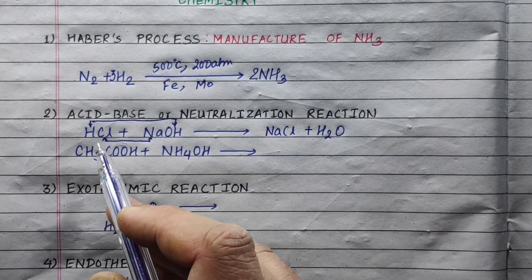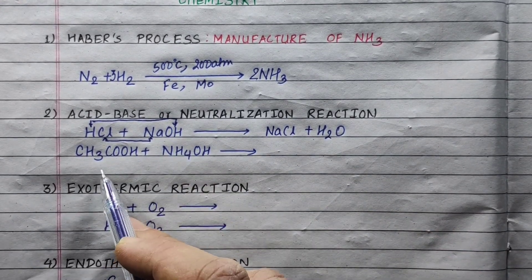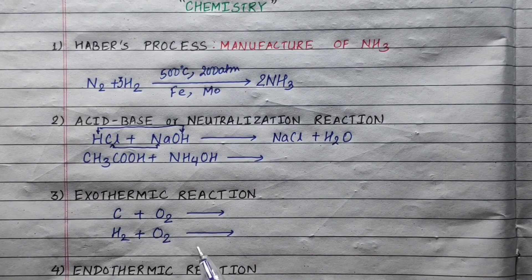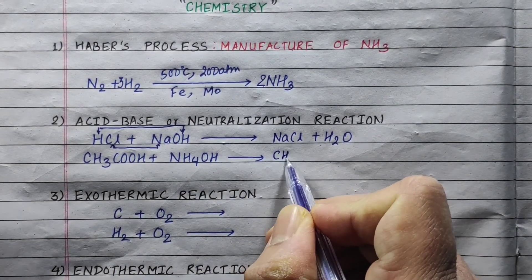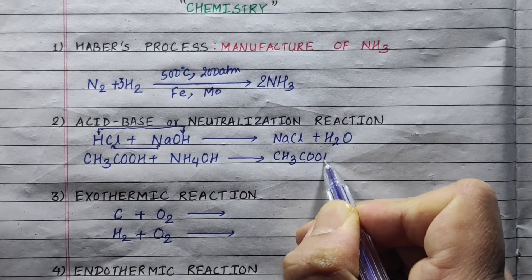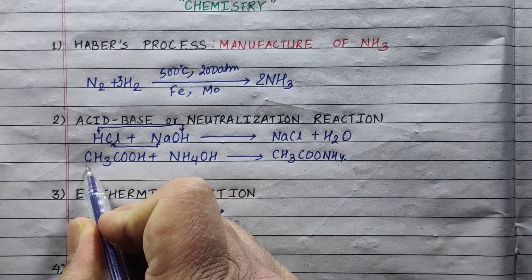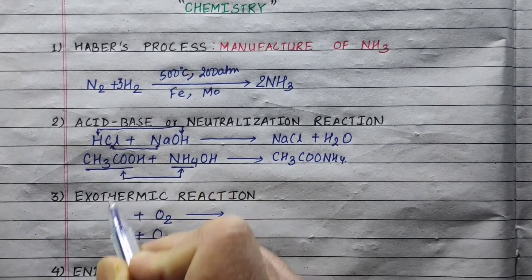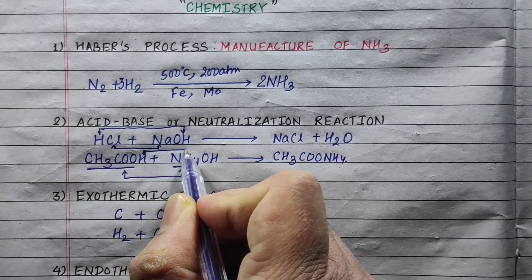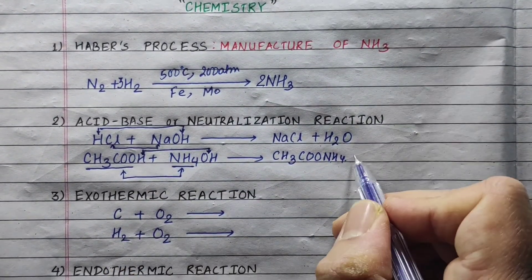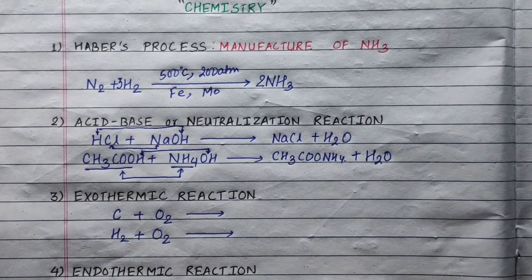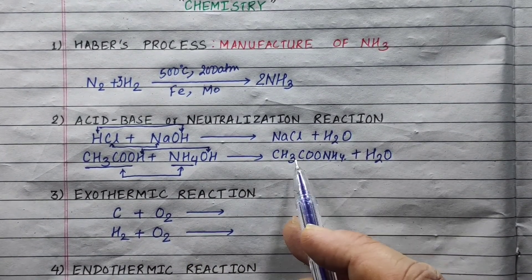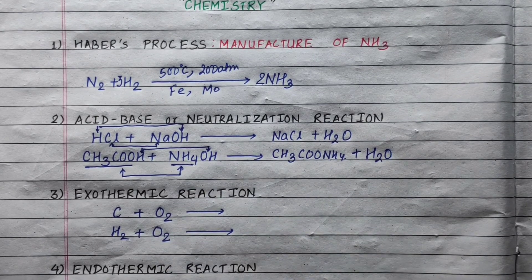This is your strong acid or strong base type, which gives salt and water. In the weak acid or weak base type, we have CH₃COO⁻ and NH₄⁺, giving a hydrogen reaction called water. So we have acetic acid plus ammonium hydroxide giving ammonium acetate and water. This is an acid-base reaction.